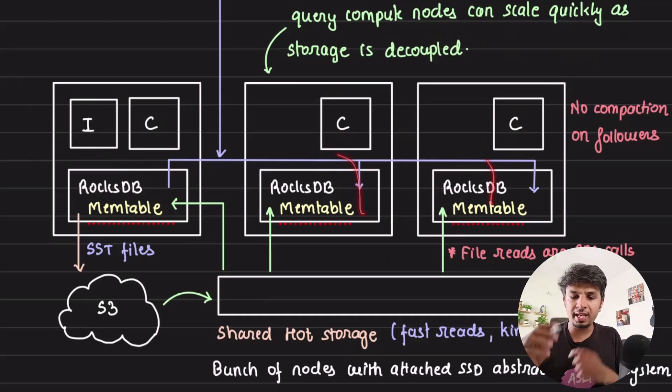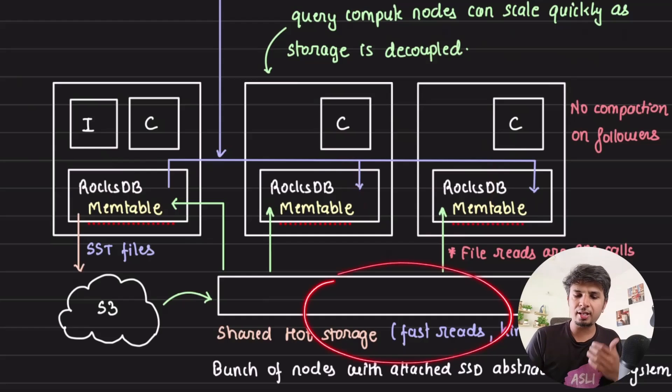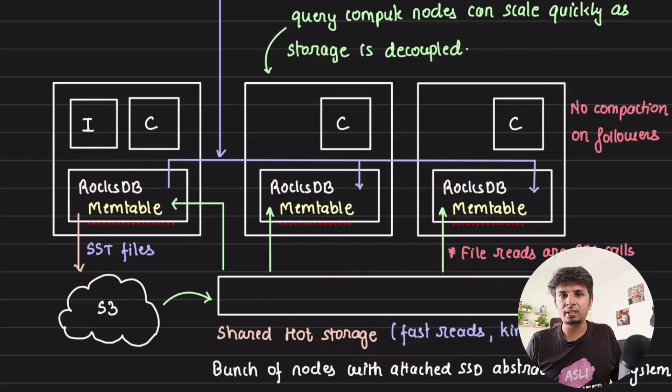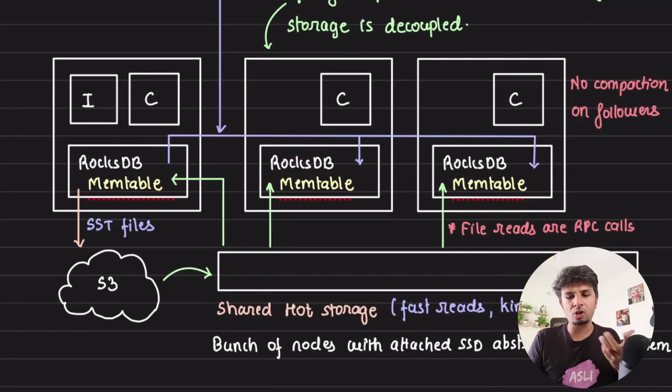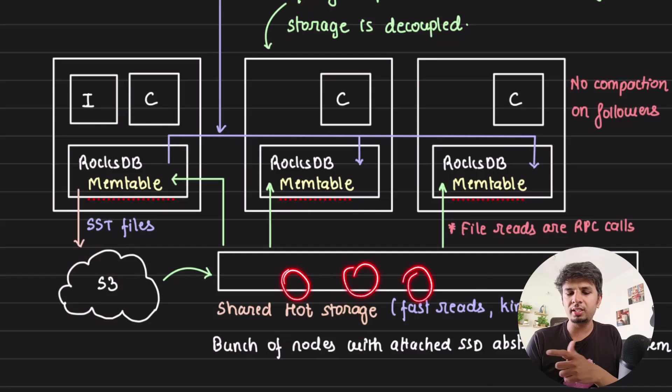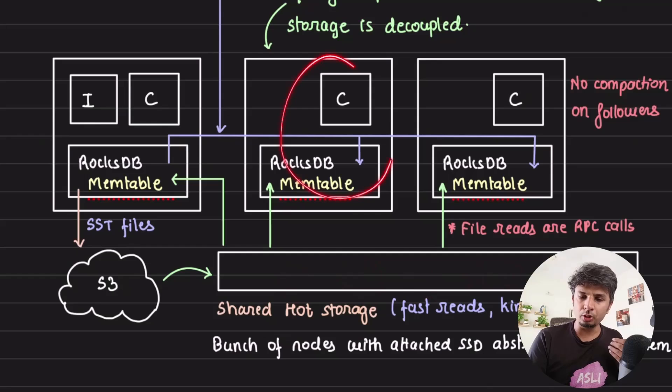Now, obviously they, these compute nodes, they still, they still rely on a hot storage. Now hot storage, this is a shared hot storage. Like how we spoke about it in storage compute separation. You have a shared storage. They also, Rockset also has a shared storage. Imagine this as a distributed file system filled with SSDs. Now this shared storage, think of it as a cache for S3. So your actual SST files are on S3, but the files that are needed frequently are stored on this shared hot storage. Compute nodes.